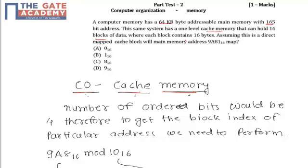16 bytes. So 16 blocks of data, each block contains 16 bytes, assuming this is a direct mapping cache. The question is: will main memory address 9A81₁₆ map to which cache block address?